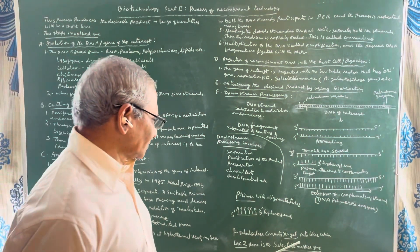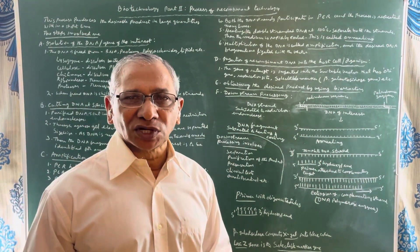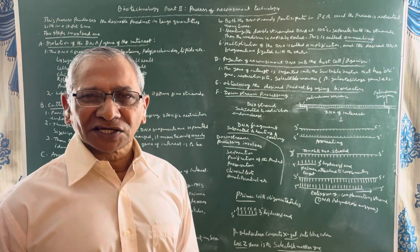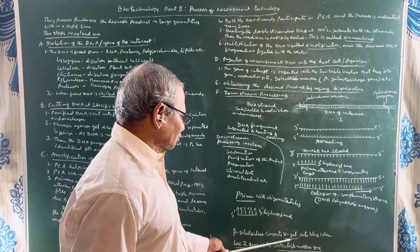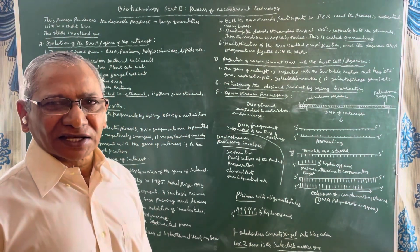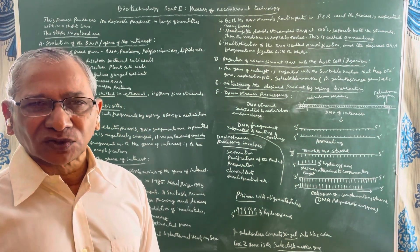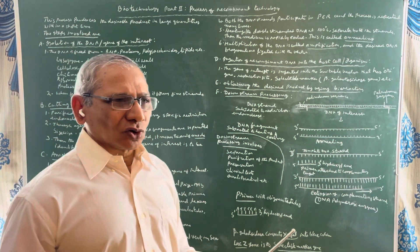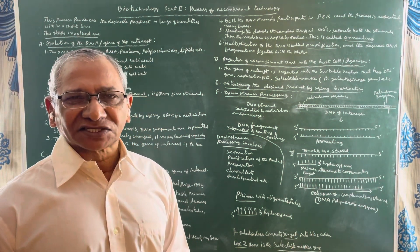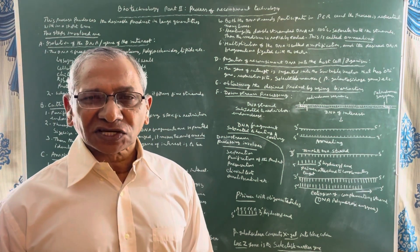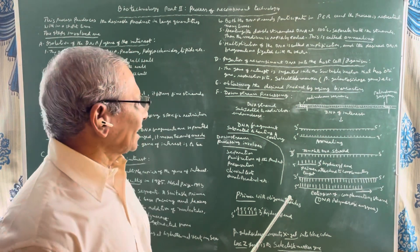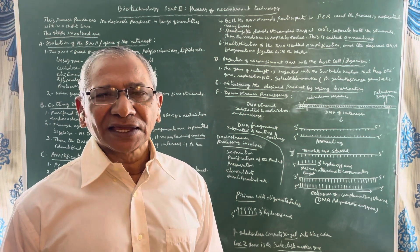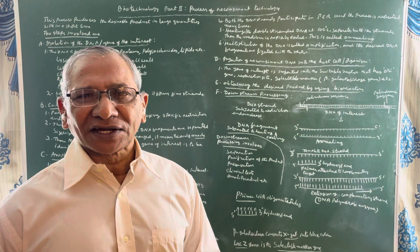The lacZ gene is responsible for the production of the enzyme beta-galactosidase. Beta-galactosidase splits lactose into glucose and galactose. It also has another function: it converts a substance known as X-gal into a blue color. X-gal is a colorless substance, but the beta-galactosidase converts X-gal into a blue colored substance. When we insert the gene of interest into the vector, the vector is cut by the same restriction endonuclease used for cutting the DNA molecule, so the same type of sticky ends are formed and these sticky ends of the DNA of interest and the vector DNA join easily.